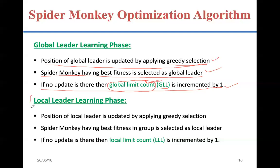The next phase is the Local Leader Learning phase. Here the local leader's new position is accepted if it is modified; otherwise the old position is carried over — this is greedy selection. Within each smaller group, the monkey with the best fitness is defined as the local leader. Similarly to the global leader learning phase, a counter called the local limit count is started. If the local leader is not updated, this local limit count is incremented by one. So there are two counters running simultaneously: one for the global leader and one for the local leader.